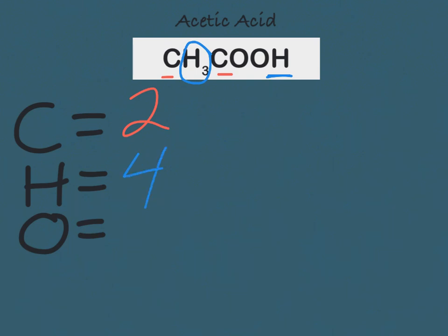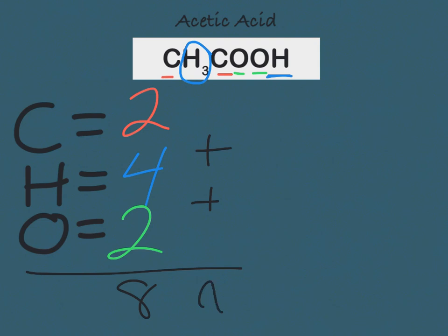Finally, we have our oxygen, or O atoms, and there are going to be a total of two oxygen atoms in this chemical formula. Adding everything together, two plus four plus two gives us a total of eight atoms in the formula for CH₃COOH.